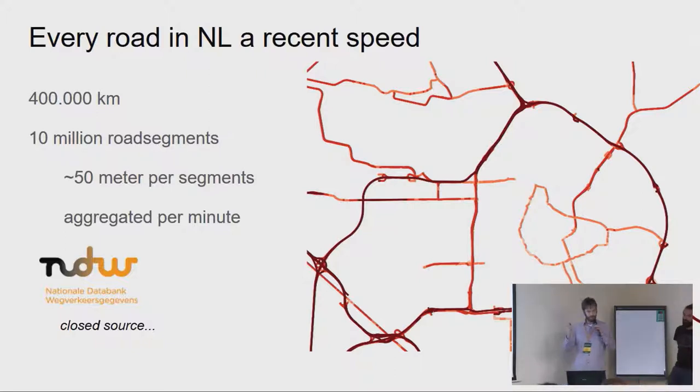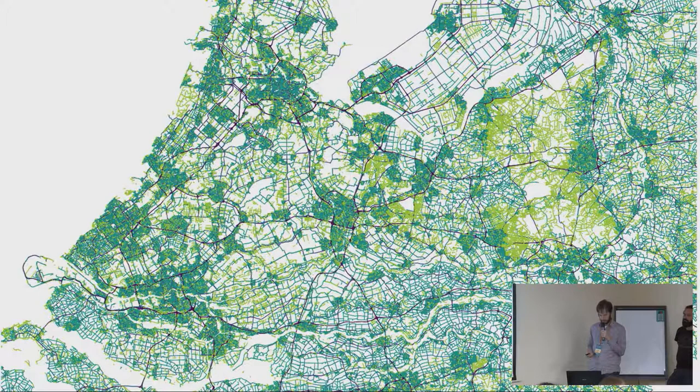So what they did, they bought a big set of floating car data from a provider, which covers roughly 400,000 kilometers of road in the Netherlands. That's about 10 million segments, every segment is about 50 meters long, and that's aggregated per minute. Unfortunately, because the data is commercially sold, it's closed source. This gives you a bit of an idea about the road network in the Netherlands - this is every road that exists. That includes the little roads on the dikes where nobody goes, but they're still in there, and theoretically they're being measured.